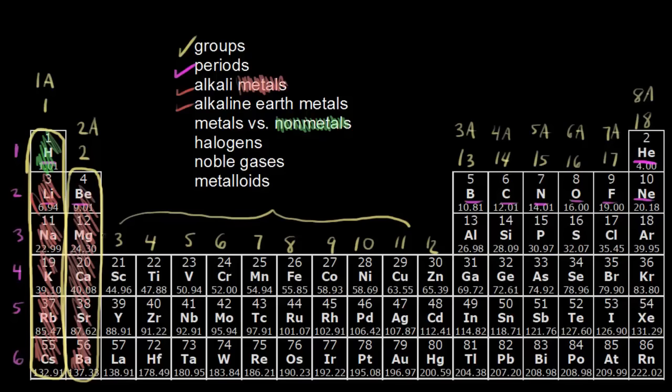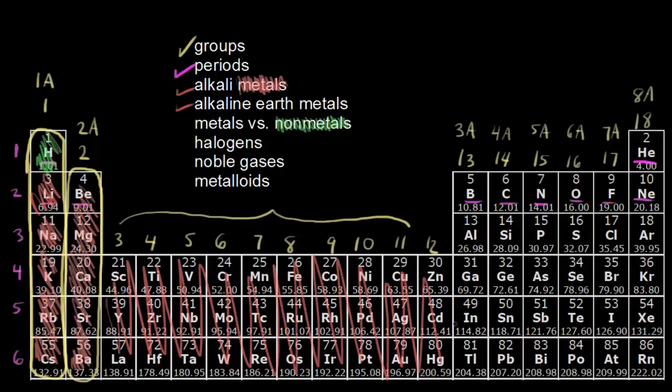For right now, let's just say groups 3 through 12, these are all metals in here. Let's talk about metals in general for a minute. The properties of metals - metals are solids at room temperature, except for mercury. Here is mercury down here, which is a liquid at room temperature.